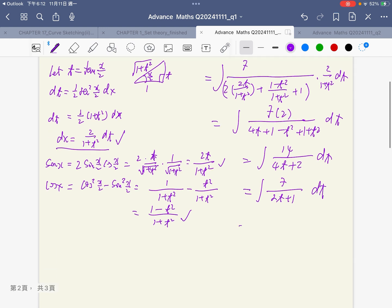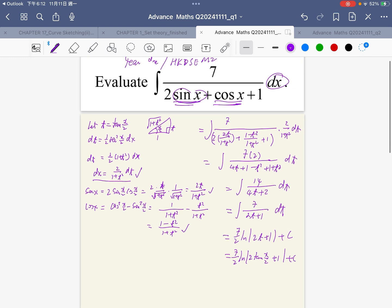The integral is 7 over 2 natural log of 2t plus 1 plus C. Converting t back to x, t is tangent x over 2, so that's 7 over 2 ln of 2 tangent x over 2 plus 1. That is the final answer.